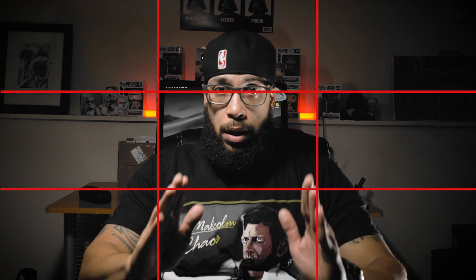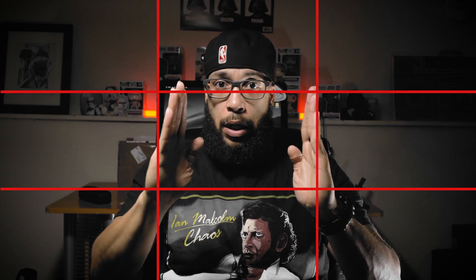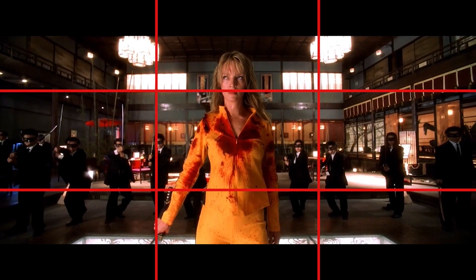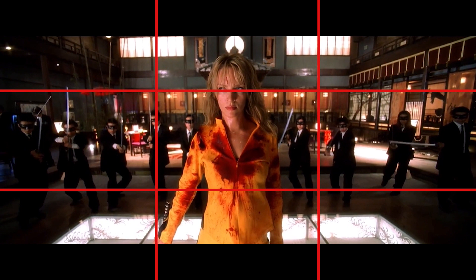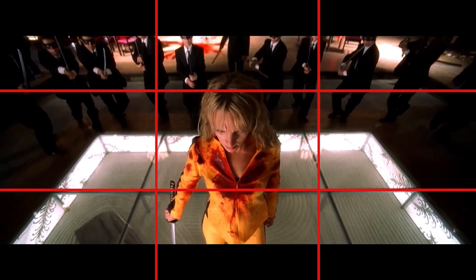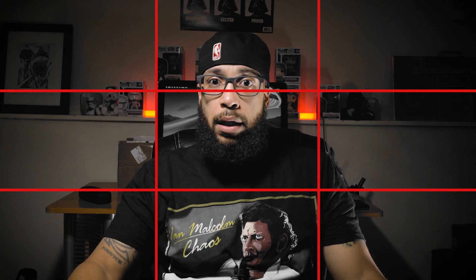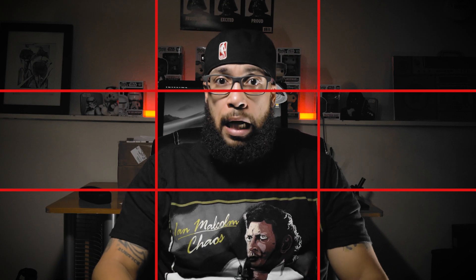So when you're talking about the rule of thirds, what you want to do is take the frame and cut it into nine equal parts — that's two vertical lines and two horizontal lines. Whatever you want your viewer to view, you place on one of those lines. Particularly right now I want you focused right here, so the rule of thirds states that that should run on one of those lines.